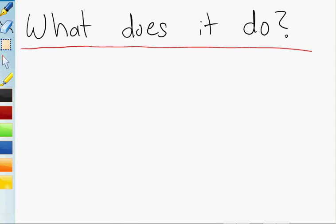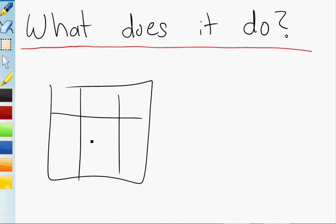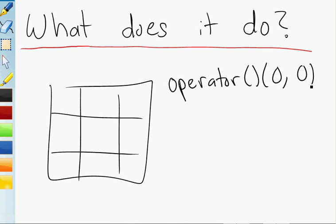First of all, what does it actually do? So take for example if we have a BMP image represented by this rectangle here on the left. If we were to call operator parentheses on the image, say x position 0,0, we'd get back a pointer to that pixel.